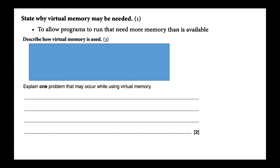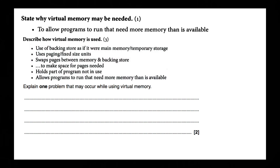Describe how virtual memory is used: use of backing store as if it were main memory or temporary storage; uses paging or fixed-sized units; swaps pages between memory and backing store to make space for pages needed; holds part of the program not in use; allows programs to run that need more memory than is available. That is three marks, so three points. I would do: uses backing store as if it were main memory; uses paging; swaps pages between memory and backing store. I'd also add 'holds part of the program not in use' as a backup.